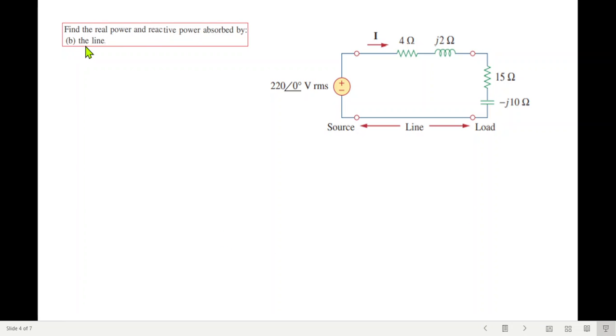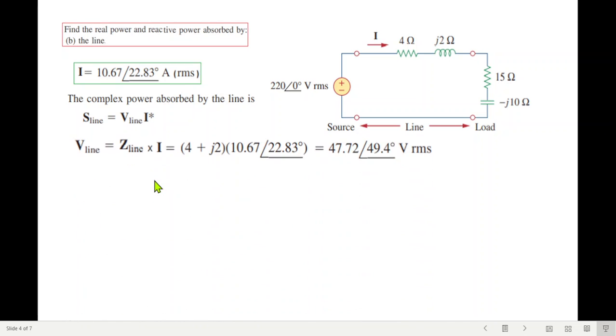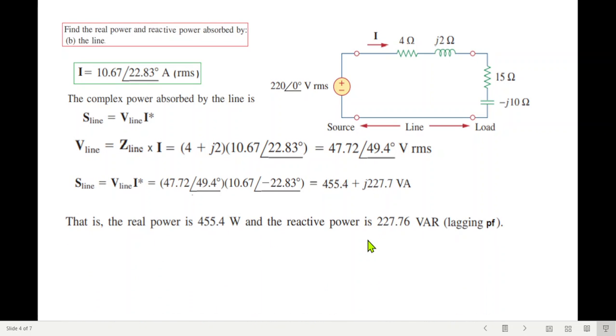The second part exactly same way for the line we have to find. Now we have known the current. We will first of all find this voltage, I into Z line. So we have to use this formula V line into I. V line we can find from Z line into I. Plugging in the values. And now S line is V line I conjugate. This value of V line. And I with the negative sign here. So this is S line power. And this is the real part. And this is imaginary part for the reactive part. So 455.4 watt. And this is 227.76 VAR.